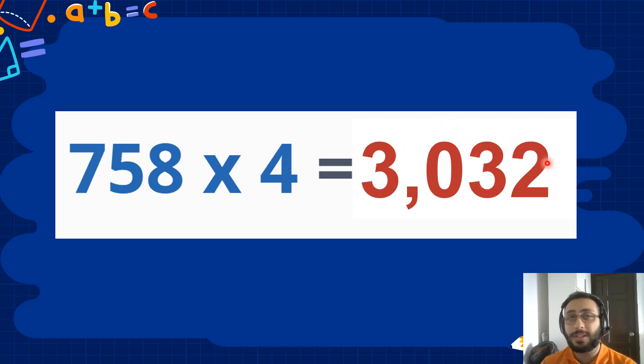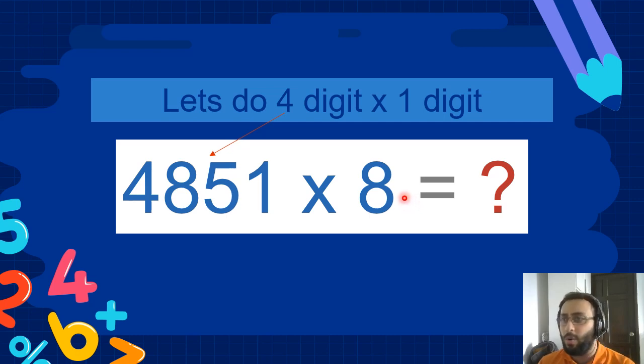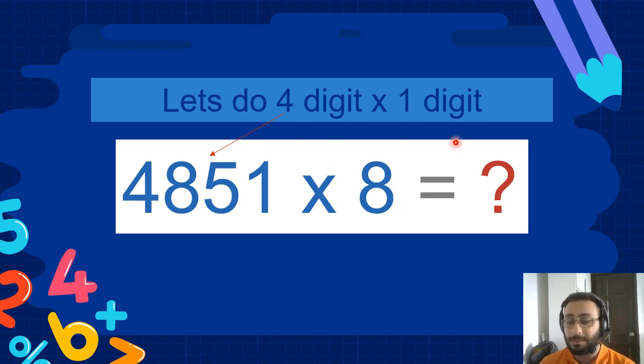3,032. Don't forget the comma to make it beautiful. Alright, let's do a four-digit times one-digit.